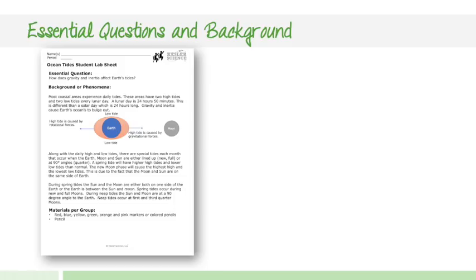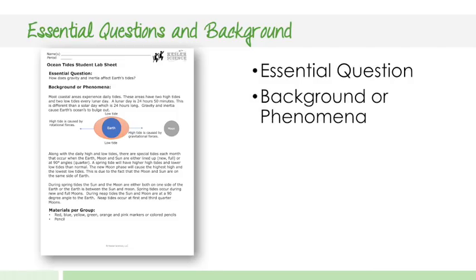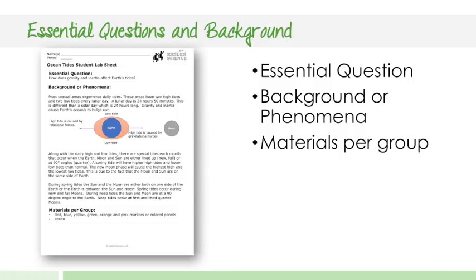Next, the essential questions and background — this is the first student page we're going to take a look at. The first thing students are going to have is an essential question. For example, how does gravity and inertia affect Earth's tides? This is something I would go over with students prior to doing the lab, as well as the background of the phenomena, because students are not going to read this information by themselves — they'll skip right to the part where it says to do something. This could be used as a class set and wouldn't need to be printed out for everyone.